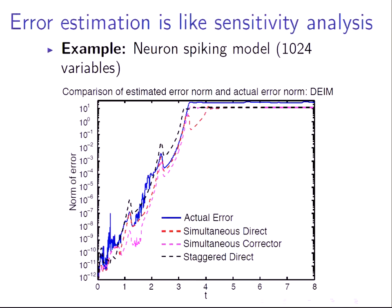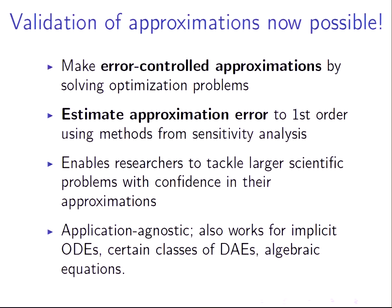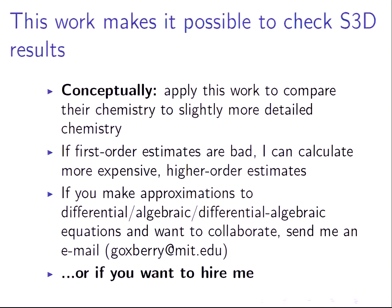It still does a very good job. Validation of our approximations is now possible. We can make error-controlled approximations using optimization problems, then estimate the approximation error to first order using methods from sensitivity analysis — which means we can tackle larger scientific problems with confidence, knowing roughly what the error is. This is application-agnostic; I've only shown the explicit ODE case, but there are many other classes of problems for which you can derive similar estimates. This makes it possible to check the results in S3D and answer some of the questions Jack had from his program manager.